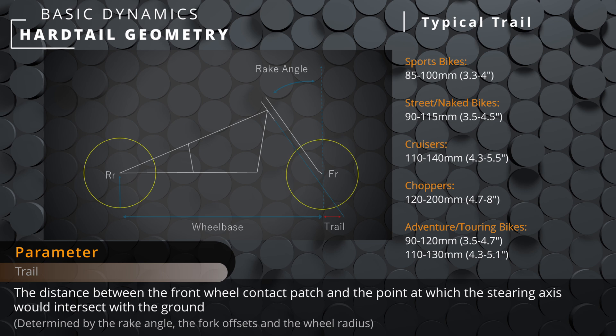Like wheelbase and rake angle, the greater the trail value, generally the more stable the bike will be, which is ideal for straight or sweeping roads. Between the different types, we can see how these values are manipulated and tuned for the desired performance. For the sports bike, rake and wheelbase should be short for agility, and with a standard wheel size the trail value can then be increased with the offset. For a cruiser or chopper, we tune everything to the max with a long wheelbase and a shallow rake angle, resulting in a potentially overly long trail. This is an example of where negative offset can be used to pull back the trail value, making it easier for rider inputs to be transmitted.